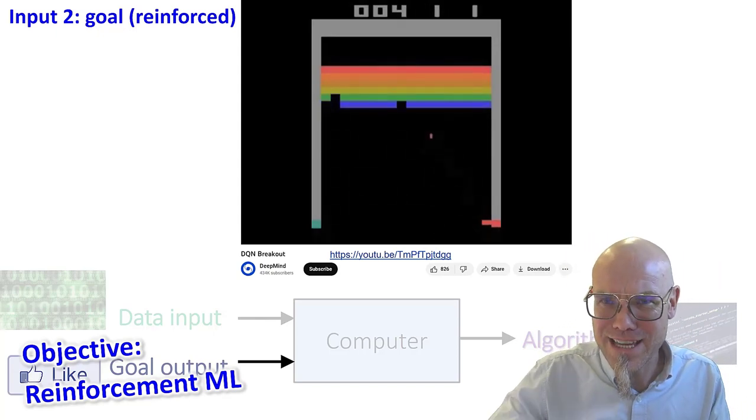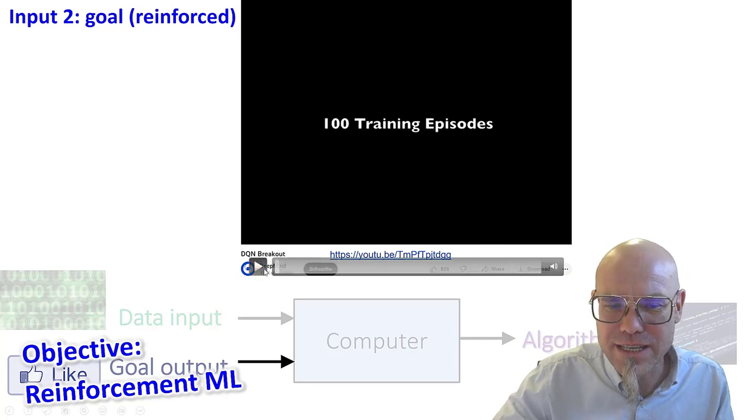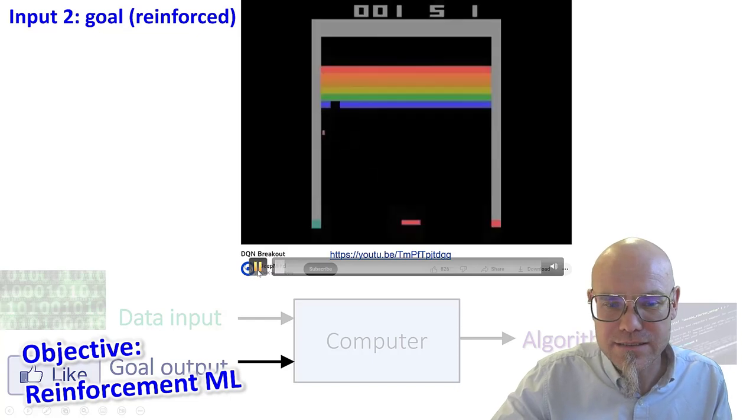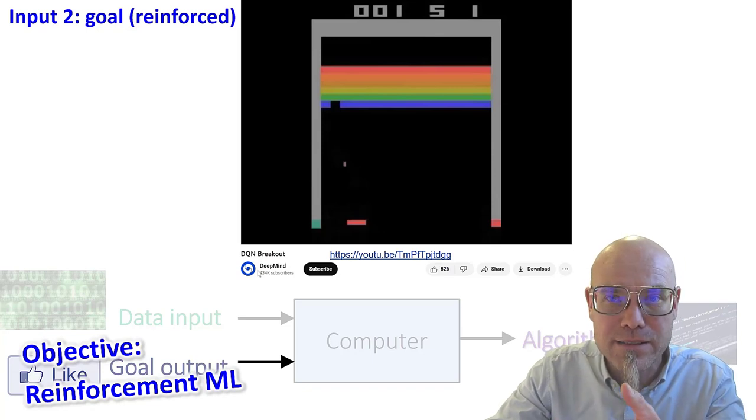This is, you remember this game, Atari game, I think I played it as a kid. And they basically, what they gave the machine at the beginning is just, you know, just the environment, just the landscape, they gave the machine the ability to recognize pixels.